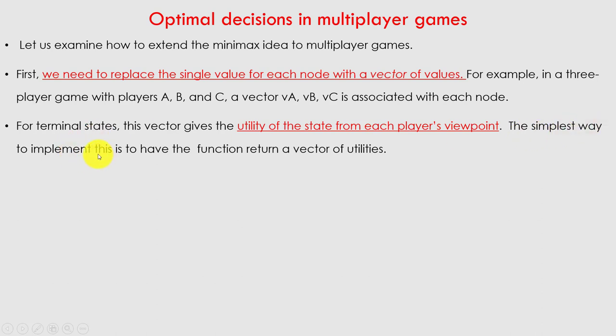The simplest way to implement this is to have the function return a vector of utilities. If there are 3 players A, B, C, then vector VB represents the viewpoint for player B. The vector VB will be the viewpoint for player B. For each player, there will be a vector, and that vector represents the player's viewpoint.